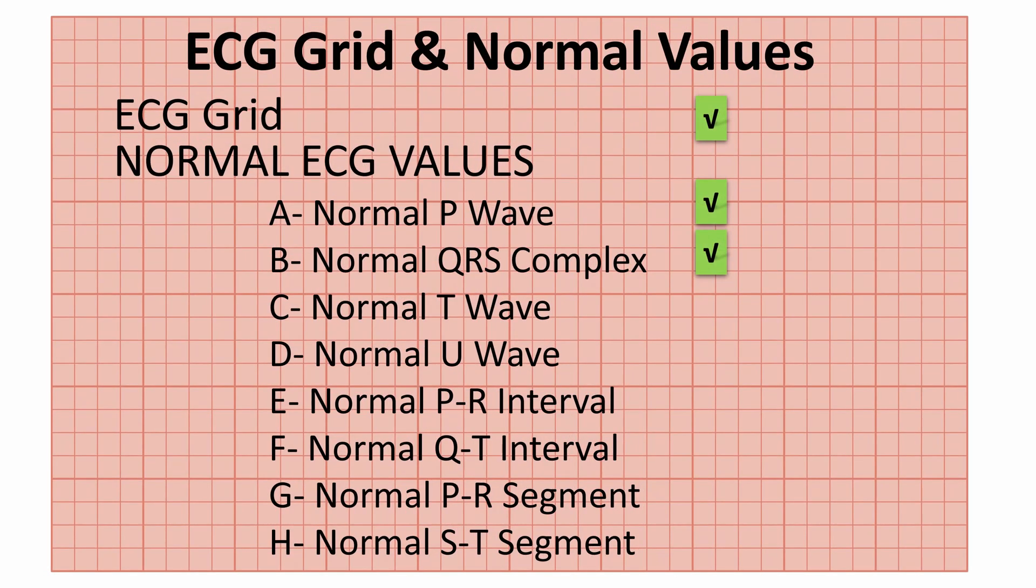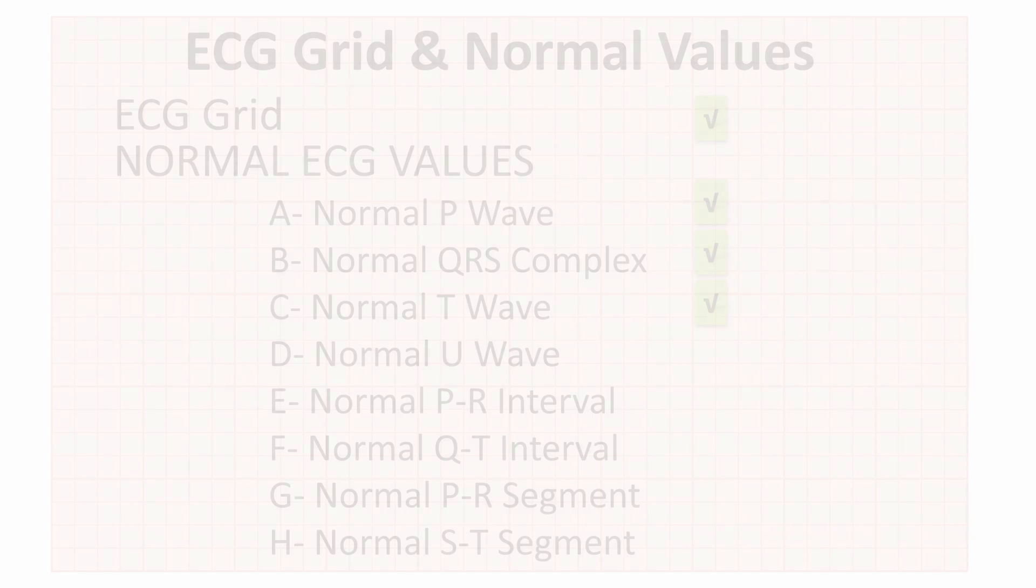So, we have finished the ECG grid and the normal P wave, QRS complex, and T wave values. We will continue our discussion about normal ECG values in the next videos. And now let's jump to the question of the day: What is biphasic T wave?